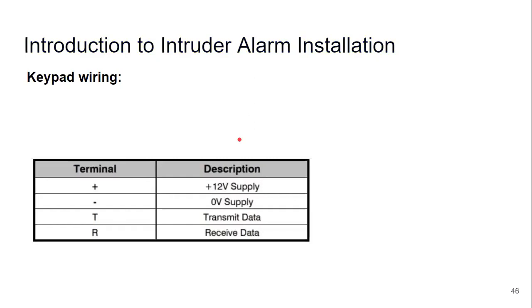Now for keypad wiring: you can buy a Honeywell PAR and connect it to a Texacom, Pyronix, or Honeywell system — it doesn't matter, because PARs work by circuitry and can connect to any system. However, for keypads — anything that makes data communication — it has to be the same brand. If it's a Honeywell system, it's got to be a Honeywell keypad; if it's Texacom, it's got to be Texacom.